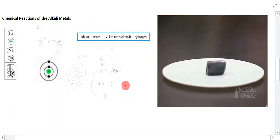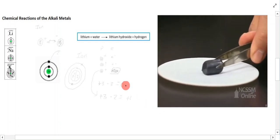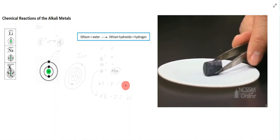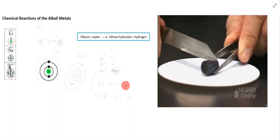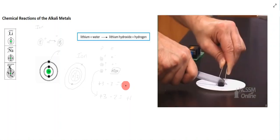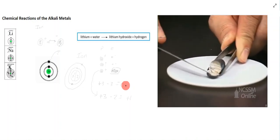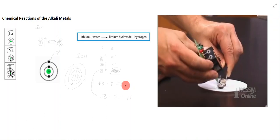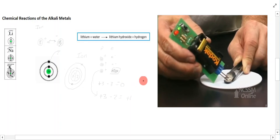We start with lithium. At this point it's coated with a layer of both the oxide and the nitride, giving it a fairly dull gray appearance. Group 1 metals tend to be relatively soft — you can easily cut the metal with a knife. When you cut it you can see the shiny metallic surface underneath. A conductivity tester shows that lithium is an excellent conductor of electricity.